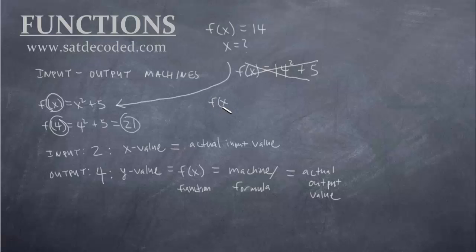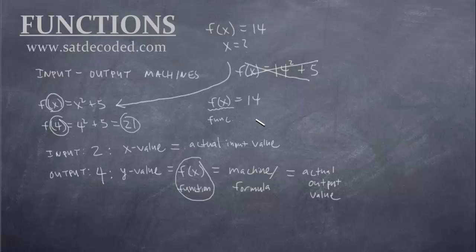If we think about what they're telling us — f of x equals 14 — this f of x portion is the function, and remember, functions are outputs. So they're telling us that the output is equal to 14. So if the output is equal to 14, why would we stick the output where the input was supposed to go? That's why 14 squared plus 5 is wrong — when they did 14 squared, they assumed 14 is the input. However, in reality, 14 is our output. Output equals output.